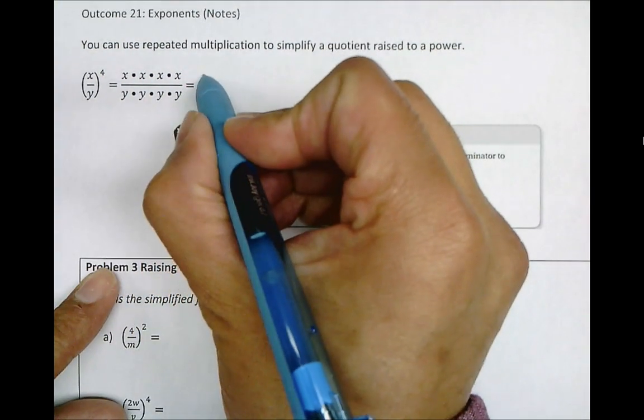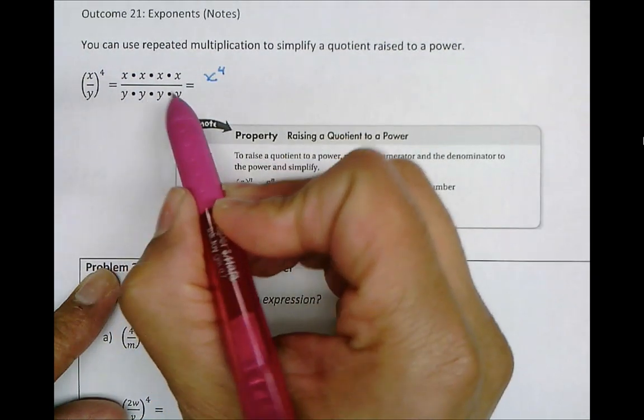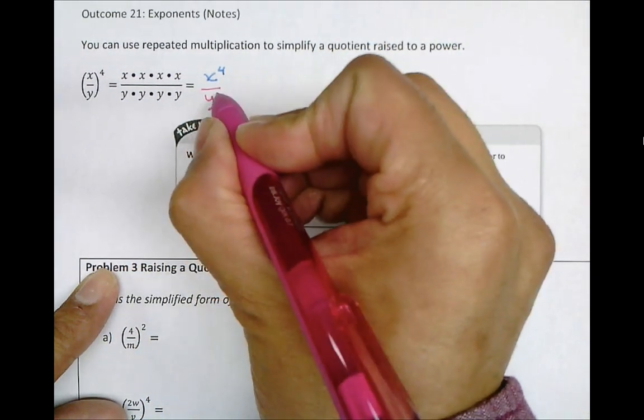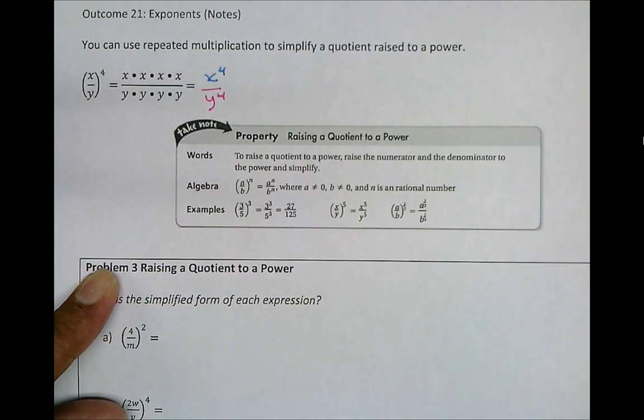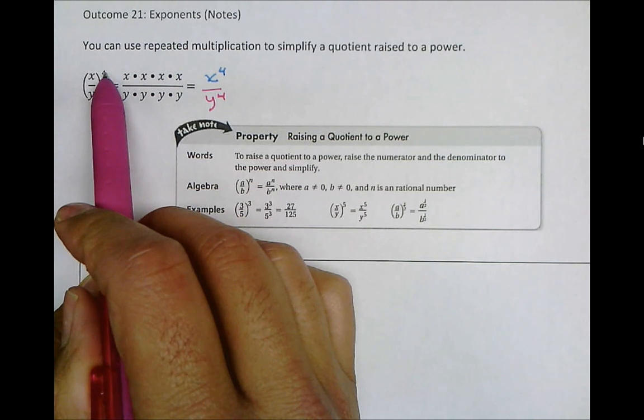What does this simplify to? x to the power of 4 in the numerator and y to the power of 4 in the denominator. So in other words, we're simply raising each part to the exponent.